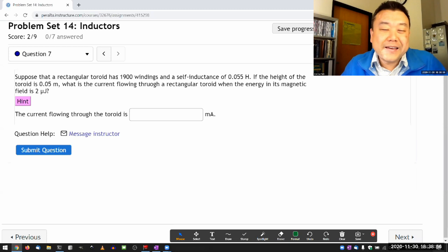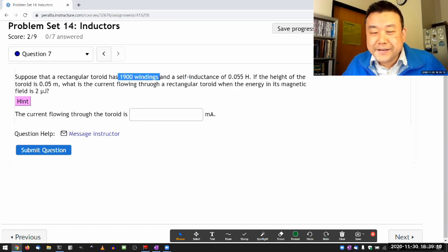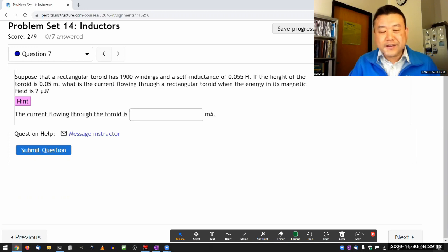It's confusing me by giving me these parameters that I don't need, because it's told me what the self inductance of this toroid is. And that's all I care about. I don't need to know the height of the toroid. I don't need to know the number of windings. Those things are unnecessary. All I need is the value of the inductance.